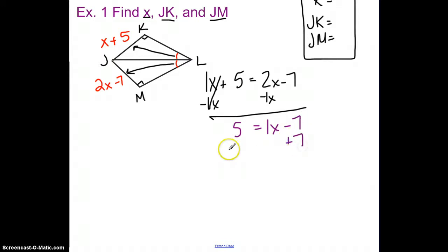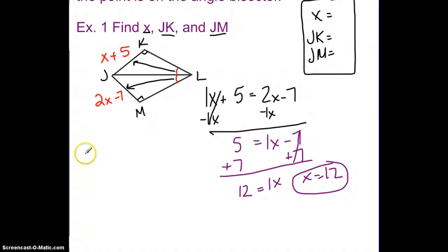Then I'm going to add 7 to both sides, and I'll get 1X equals 12. So in this problem, X equals 12 is part of my answer. So I'm going to circle that, and I'm going to pull down the page a little bit and put my 12 here.